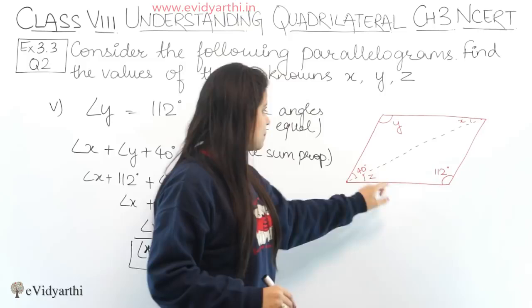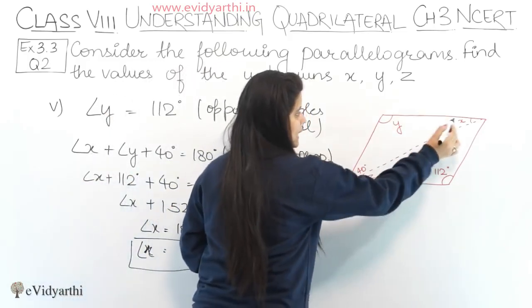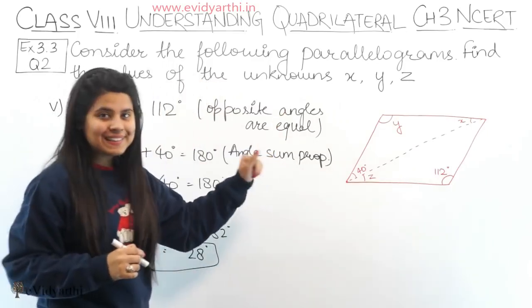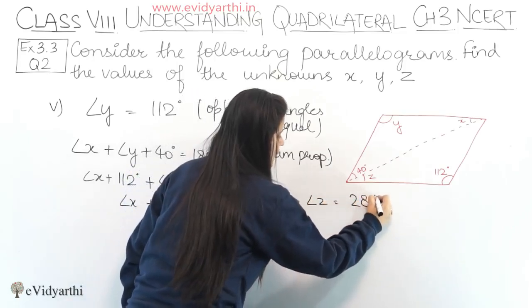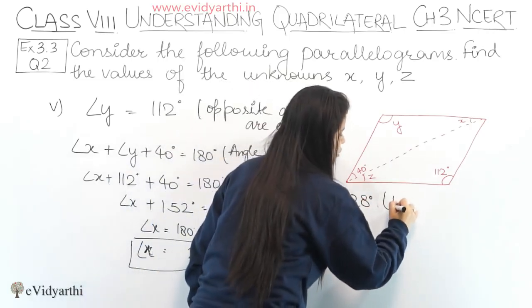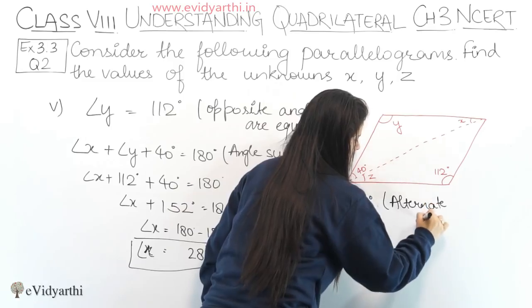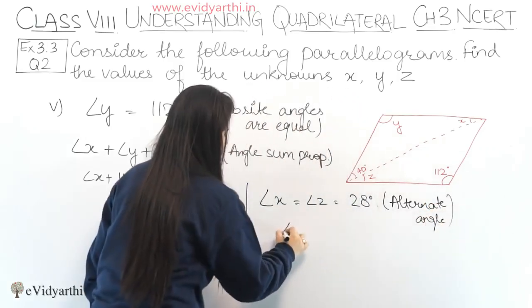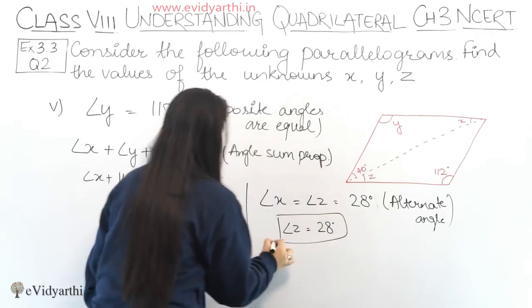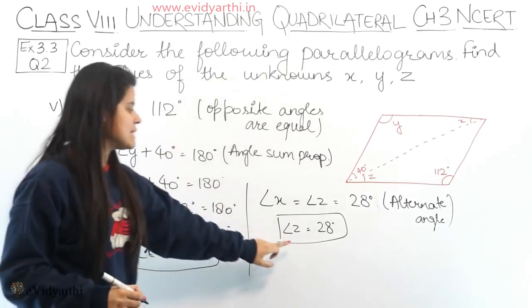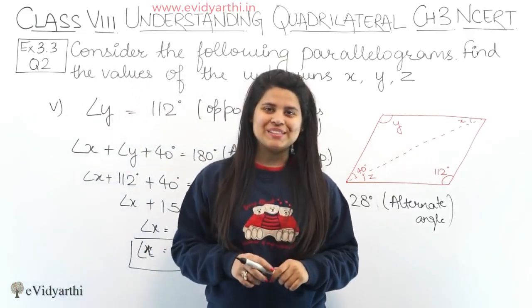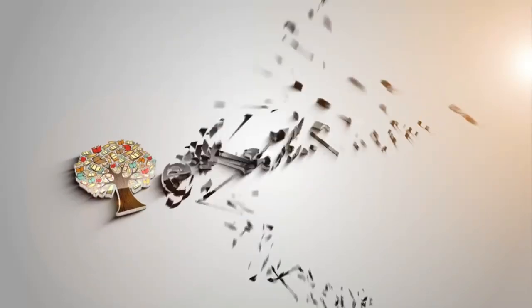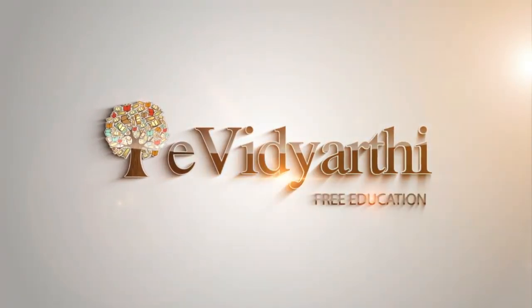Now we have x and y. For z: angle x = angle z because they are alternate interior angles. So z = 28°. Therefore x = 28°, y = 112°, and z = 28°. This was part number 5 and the last part of this question. Thank you.